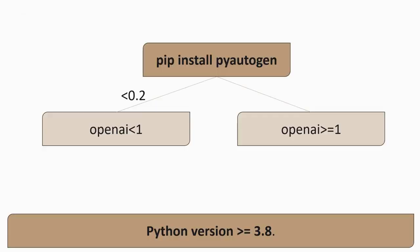Autogen requires a Python version greater than or equal to 3.8. We install it using pip install pyautogen. If we use a version less than 0.2, it requires an OpenAI version of less than 1. Otherwise, the OpenAI version has to be greater than or equal to 1.